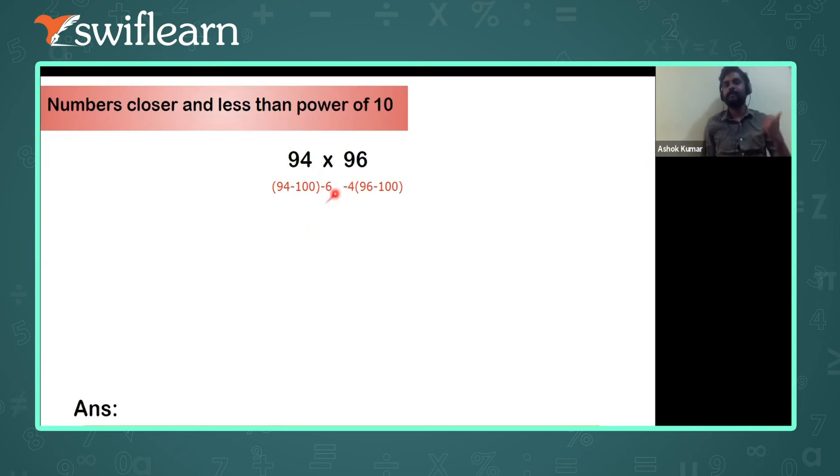Wherever the problem we solve, yeah, so the answer would be 90... yeah, 9024, right? Yes, correct, yeah, yeah, correct. This is the correct answer.